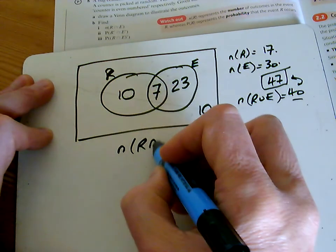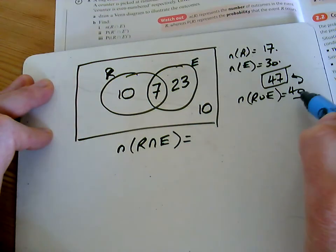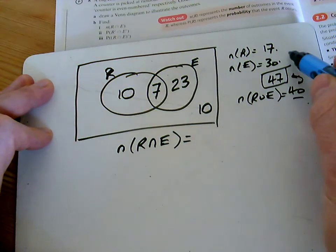The question says find out the number in the intersection. We did that straight away. That was the 7 that we noticed there.